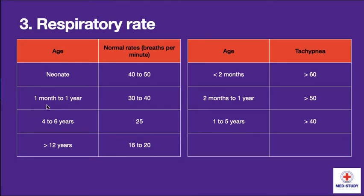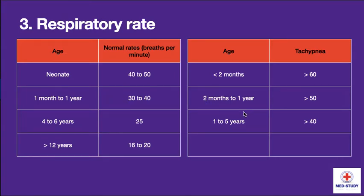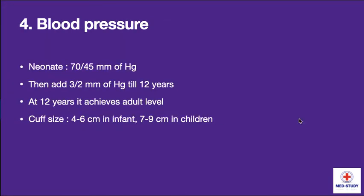Now going to respiratory rate, which also varies by age. For neonate it is 40 to 50 breaths per minute. For one month to one year it is 30 to 40 breaths per minute. From four to six years it is around 25 breaths per minute. For more than 12 years it is 16 to 20 breaths per minute. For defining tachypnea: for less than two months it should be more than 60 breaths per minute; from two months to one year more than 50; and from one year to five years more than 40 breaths per minute.